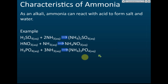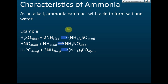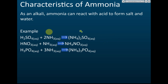Let's look at the characteristics of ammonia — this is a revision from chapter seven on acids and bases. Ammonia is a weak alkali, and all alkalis can react with acids to produce salt and water. For example, sulfuric acid with ammonia produces ammonium sulfate, nitric acid with ammonia produces ammonium nitrate, and phosphoric acid with ammonia produces ammonium phosphate.